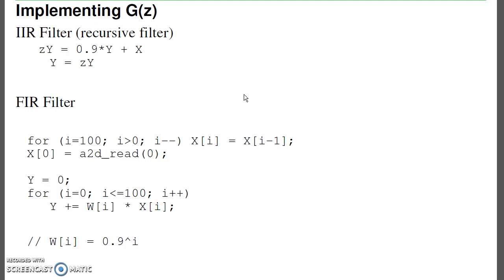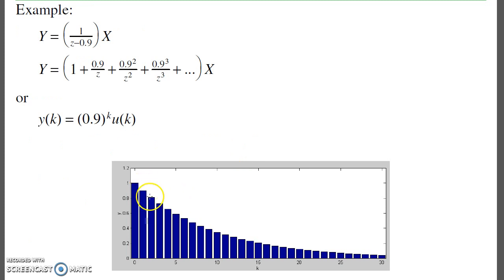The idea is, well, let's just have a lookup table. I'm going to record the last 100 values of that weighting, the 0.9, 0.9 squared, 0.9 cubed. That's my lookup table.